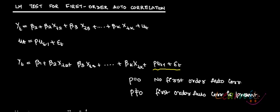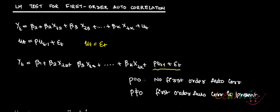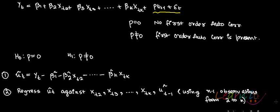Now you want to test whether rho is equal to 0 or not equal to 0. In case rho is equal to 0, then ut will become equal to εt, so whether you write ut or εt it doesn't matter. If rho is equal to 0, there is no first-order autocorrelation. If rho is not equal to 0, then first-order autocorrelation is present.